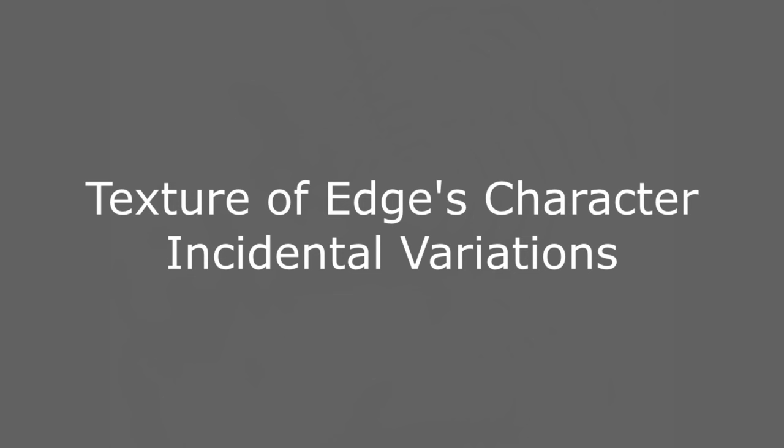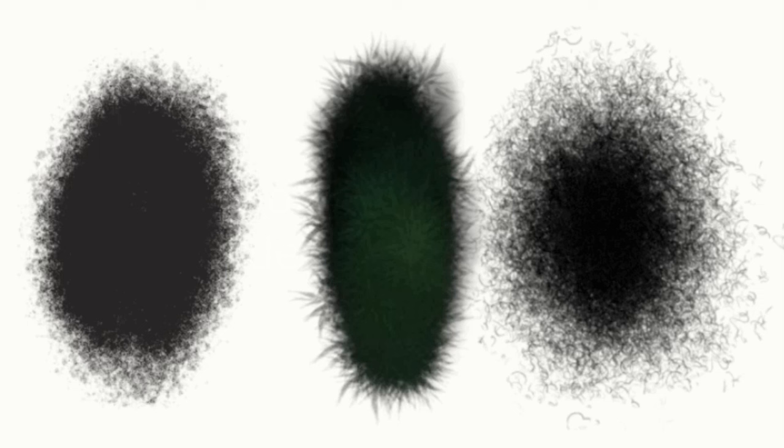There's one more element to add: the texture of the edge's character. Edges are not always straight or curved — a lot of times they have little incidental variations that carry a kind of texture. Here are three examples. Edge texture can carry these incidental variations depending on whether that edge is created by hair, bark, grass, or all kinds of things in nature. That too has to figure into everything else we've been discussing.